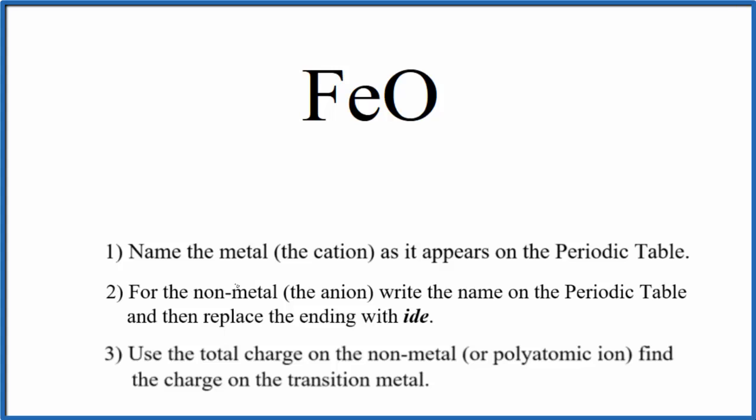First, we write the name for the metal as it appears on the periodic table. Fe, that's iron. Next, we write the name for the nonmetal as it appears on the periodic table. O, that's oxygen. Then we replace the ending -ygen with -ide. So far we have iron oxide as a name for FeO.